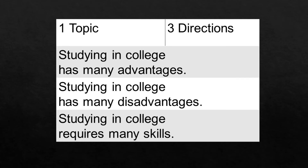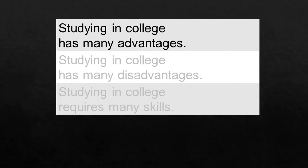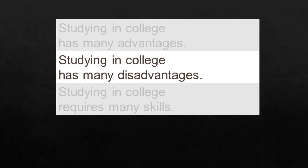The three topic sentences are: 'Studying in college has many advantages,' 'Studying in college has many disadvantages,' and 'Studying in college requires many skills.' Remember that the direction restricts the discussion.